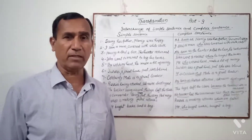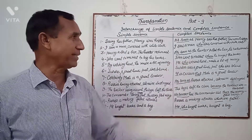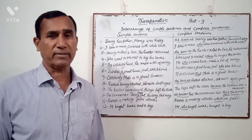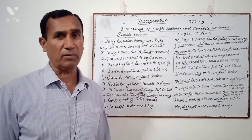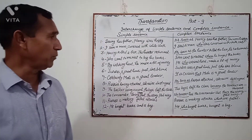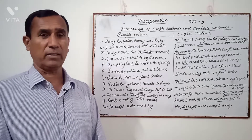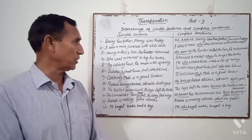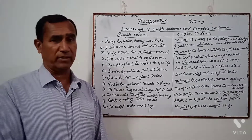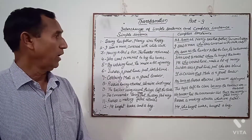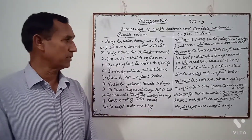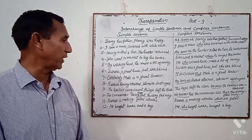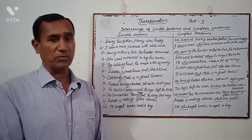Example: "By working hard, he made a lot of money." Complex: "He who worked hard made a lot of money." Example: "It is certain that Modi is a great leader." Example: "Russia having attacked, Ukraine destroyed." "As soon as Russia attacked, Ukraine destroyed." "The teacher being absent, the boys left the class." Complex: "The boys left the class because the teacher was absent."